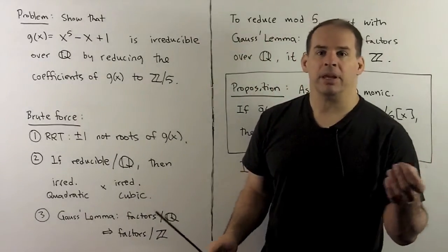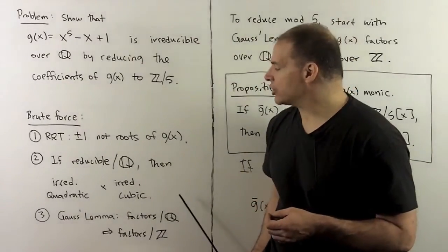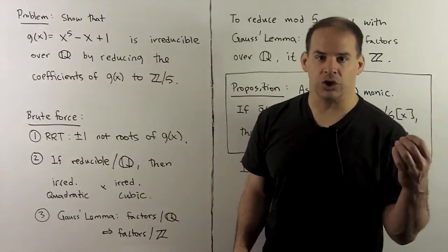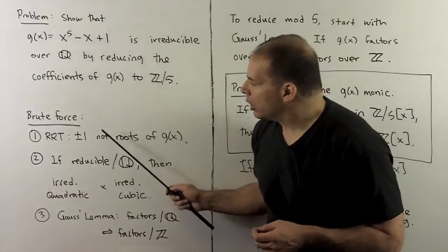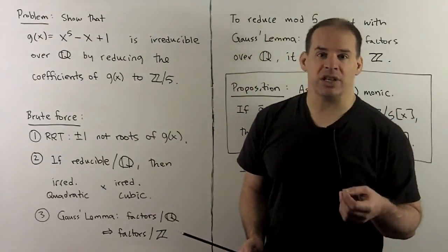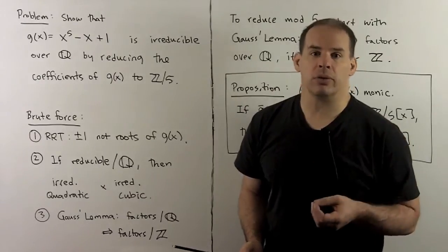That means it would have to factor as an irreducible quadratic times an irreducible cubic. Now, by Gauss's Lemma, if this had a factorization over the rationals, we would have a corresponding factorization over the integers. So when we put two and three together with brute force, factorization can't happen. So irreducible over the rationals.